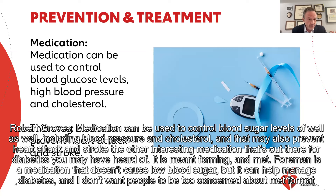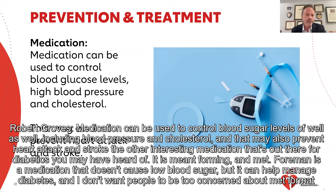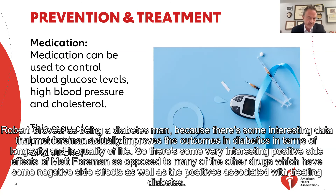Medication can be used to control blood sugar levels as well, including blood pressure and cholesterol — that may also prevent heart attack and stroke. There's an interesting medication for diabetics called metformin. Metformin is a medication that doesn't cause low blood sugar, but it can help manage diabetes. There's some interesting data that metformin actually improves outcomes in diabetics in terms of longevity and quality of life. So there are some very interesting positive side effects of metformin, as opposed to many other drugs which have some negative side effects along with the positives of treating diabetes.